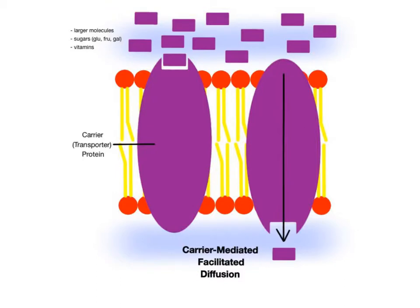Carrier-mediated facilitated diffusion uses integral proteins called carrier or transporter proteins. These proteins help in the passive transport of larger molecules into or out of the cell, including sugars such as glucose, fructose, and galactose, as well as vitamins.